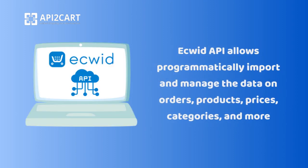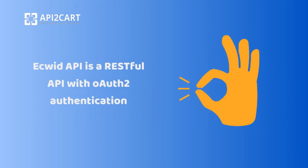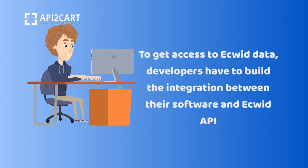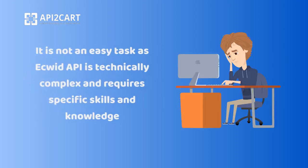Equid API allows programmatically importing and managing data on orders, products, prices, categories, and more. Equid API is a RESTful API with OAuth 2 authentication. To get access to Equid data, developers have to build the integration between their software and Equid API. It is not an easy task, as Equid API is technically complex and requires specific skills and knowledge.